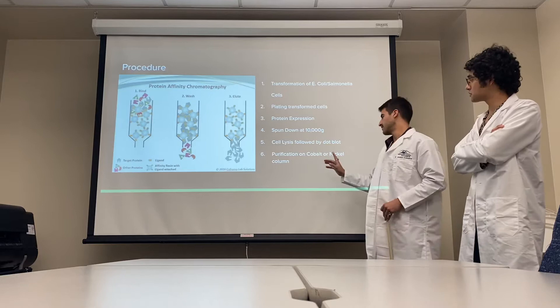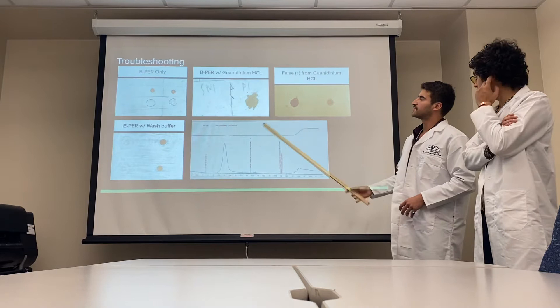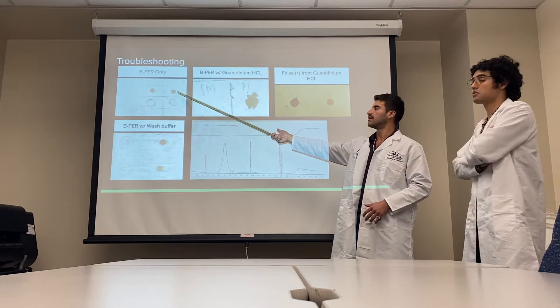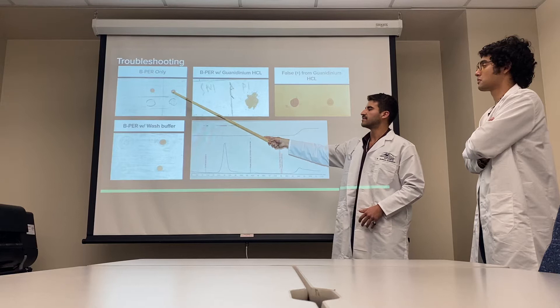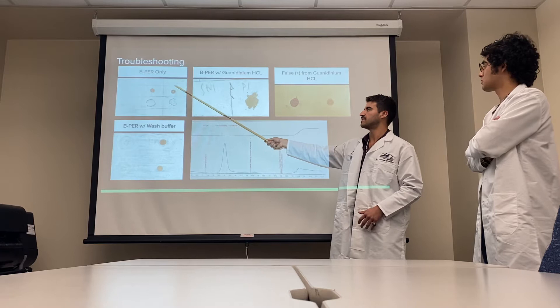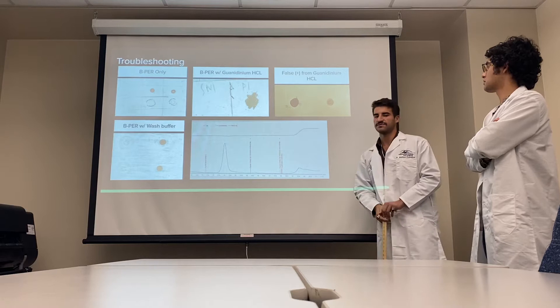Here was the troubleshooting process. We used BEPPER only — a detergent used to break down the cell wall of the bacteria. Here is the pellet and the supernatant. The pellet is very dark, indicating that the protein is there. The supernatant has basically nothing in it, which is unusual given that our protein is typically a periplasmic protein.